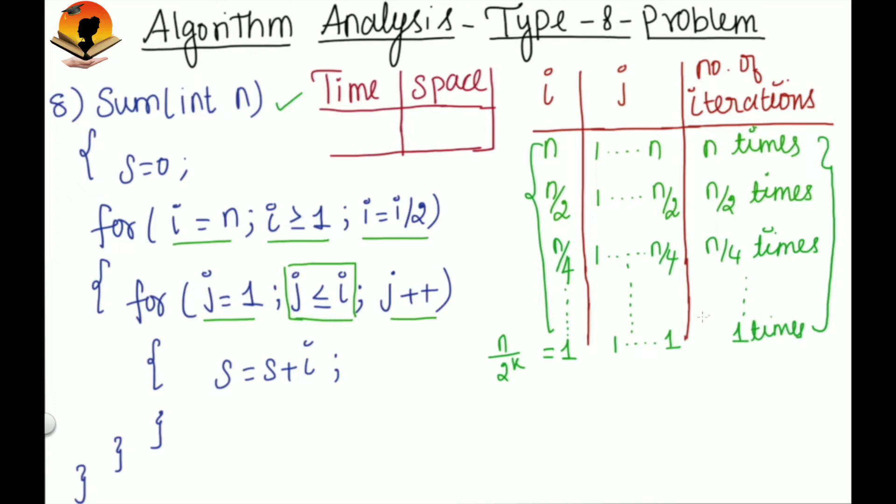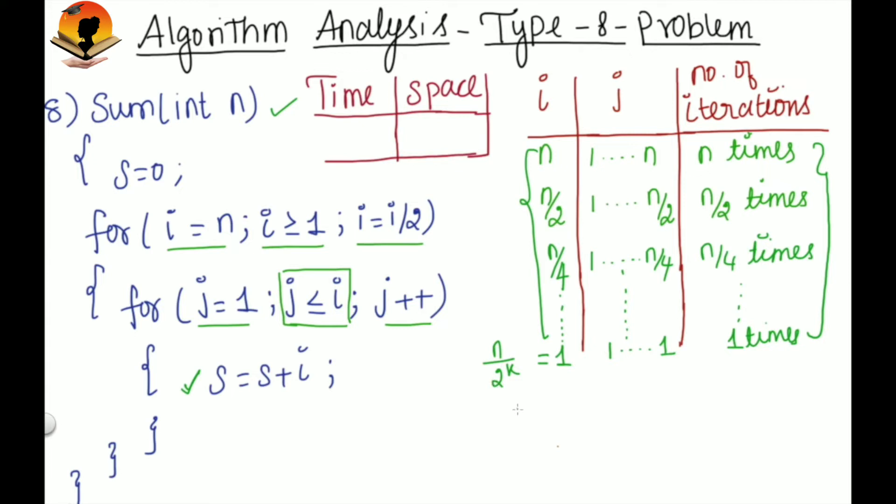Now if you sum up these values, then you will get the total number of iterations. And that much amount of time, this statement will be executed. So sum up these values: n plus n by 2 plus n by 4 plus n by 8 plus up to 1. Now you can rewrite this 1 as n by 2 power k.